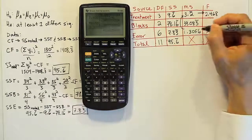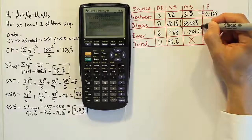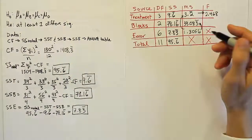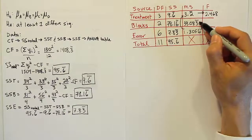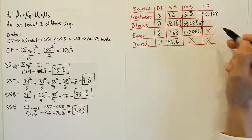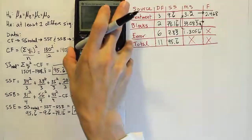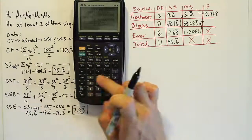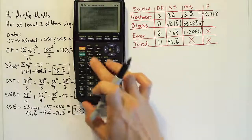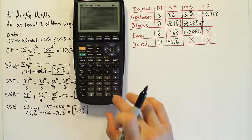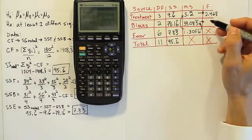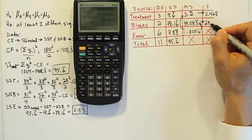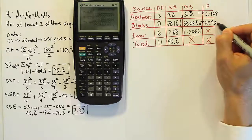And now I'll do the same for the blocks. Remember, this MSE goes into the MS for blocks, the mean square for blocks. So, MSE into MSB. 39.083 repeating divided by that MSE. And it'll give us 29.936.